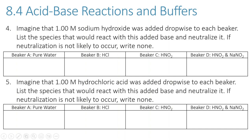Now let's think about adding sodium hydroxide to each beaker. NaOH is a strong base, so any weak acids or strong acids present could neutralize it. In beaker A, which is just pure water, there's nothing to neutralize sodium hydroxide. Water can act as an acid, but it's a very, very weak acid, so we won't see any neutralization. As soon as you put one drop of that base into beaker A, the pH will shoot up.